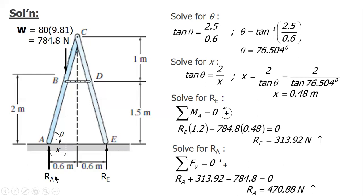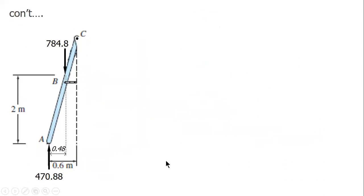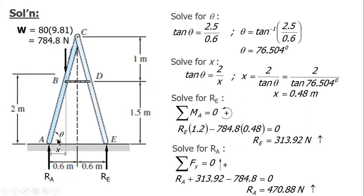Since you already have the value of RA, dismember the frame, isolate member EBC. Cut cable BD to get the tension. So this is the weight 784.8, you already have the reaction 470.88, and then X is 0.48.